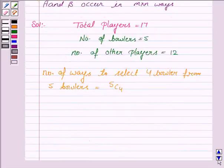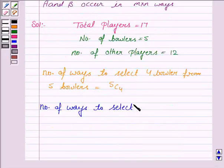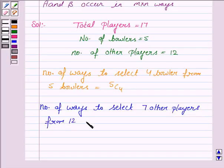Similarly, the number of ways to select 7 other players from 12 other players is equal to 12C7.